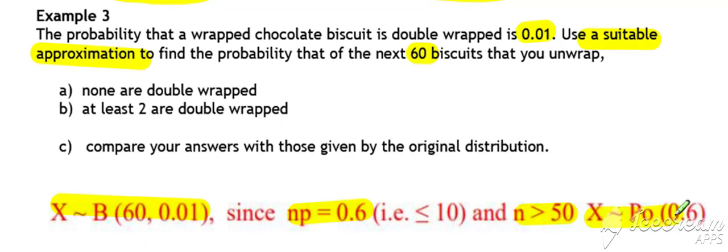Then we can work out our lambda value and use our Poisson instead of our binomial to find the probability that x is equal to zero, either from calculator or from formula as it's been done here. Similarly, greater than or equal to 2 can be found using the Poisson.